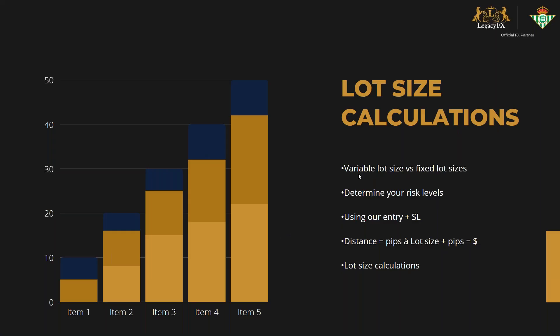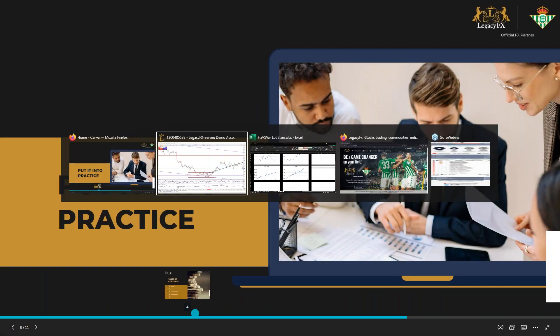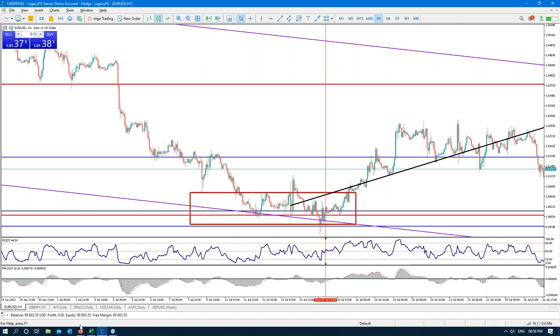Like I just said: distance is pips with a lot. Pips alone is just a number. Lot size plus pips is a value. So the distance of pips on its own means nothing — until you put a lot size to it, that's when you commit to profit and commit to risk. And that's how lot size calculations work. Let's recap everything from scratch on a new chart — quick and dirty. Give me a chart to analyze.